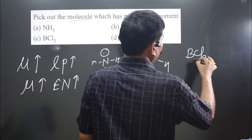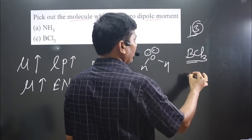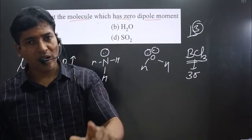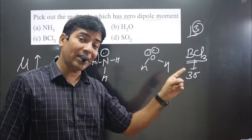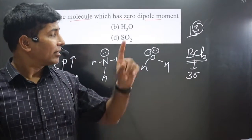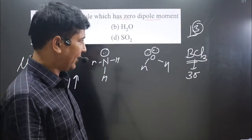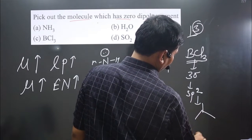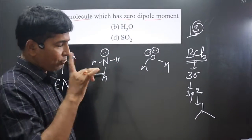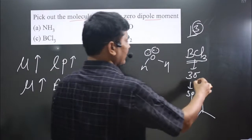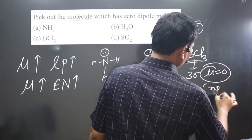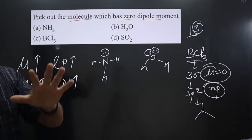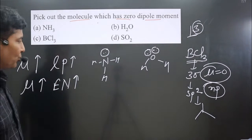Next, BCl₃. Boron is in group 13, having three valence electrons, and it is forming three bonds. All valence electrons are used in bond formation, meaning boron does not carry any lone pairs on the central element. Hybridization will be sp2, giving trigonal planar regular geometry. With regular geometry and no lone pair on the central element, dipole moment will be zero — BCl₃ is nonpolar. This is what we are looking for: BCl₃ has zero dipole moment.